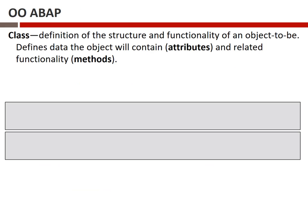Everything in object-oriented programming — whether ABAP or other languages — begins with the concept of a class. A class is a definition of the structure and functionality of what will ultimately be an object in your program. I like to think of a class as an object blueprint. You can create a blueprint for a building, but that blueprint is obviously not the building — you have to go out and actually build it. Similarly, a class defines the structure of what will be an object, but it's not actually an object until you create one in the context of your program.